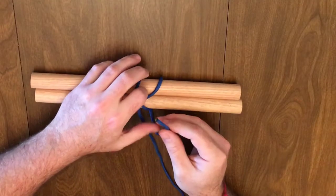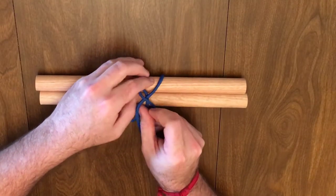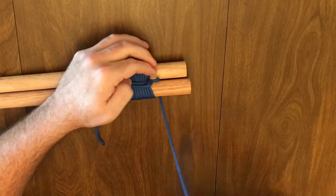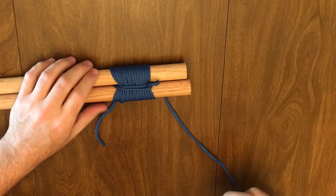If you find it easier, you can also try doing the initial clove hitch around both poles. Another variation I found is using two half hitches to finish the hitch.